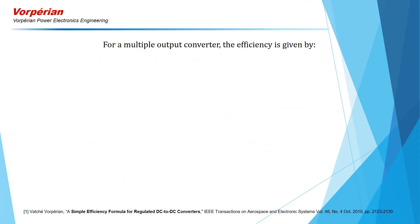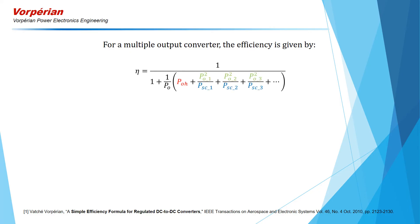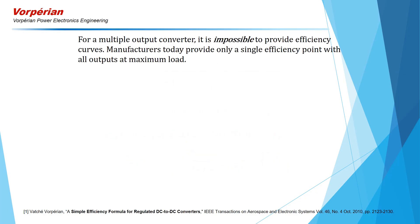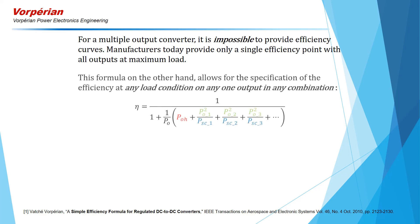For a multiple output converter, the efficiency is given by the following formula. In this formula, PO is the sum of all output powers — PO1, PO2, PO3, etc. POH is the measured input power at no load on all outputs. PSC is defined for each individual output at maximum power on that output, while the power on all other outputs is zero. For a multiple output converter, it is impossible to provide efficiency curves, and manufacturers today provide only a single efficiency point with all outputs at maximum load. This formula, on the other hand, allows for the specification of the efficiency at any load condition on any one output in any combination.